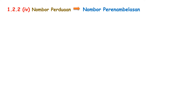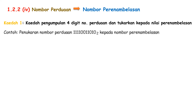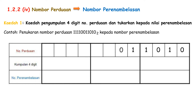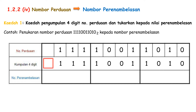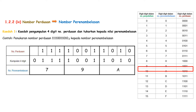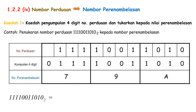Conversion of Nombor Perduaan to Nombor Perenamblasan. There are two kaedah to convert Nombor Perduaan to Nombor Perenamblasan. The first kaedah is kaedah pengumpulan 4 digit Nombor Perduaan dan tukarkan kepada Nilai Perenamblasan. Let us learn by an example. Convert Nombor Perduaan 111100110 to Nombor Perenamblasan. First, write down the Nombor Perduaan from right to left. After that, group the Nombor Perduaan 4 in one group. If the left group still has empty space, we just need to fill in with zero. After that, refer the table: 0111 is 7, 1001 is 9, and 0010 is 2. Therefore, Nombor Perduaan 111100110 is Nombor Perenamblasan 792.